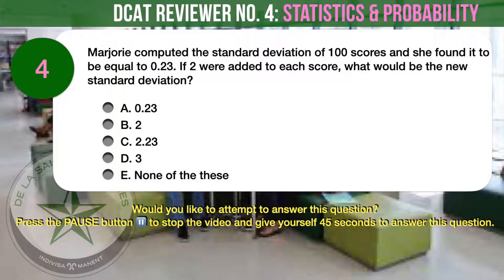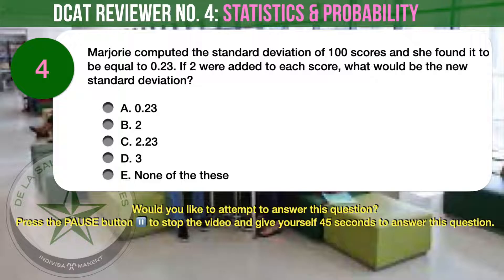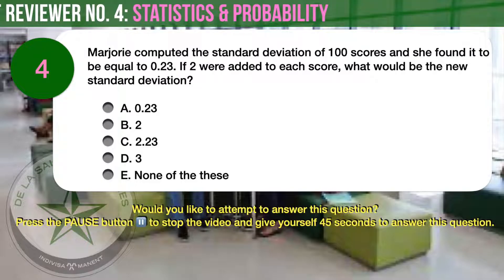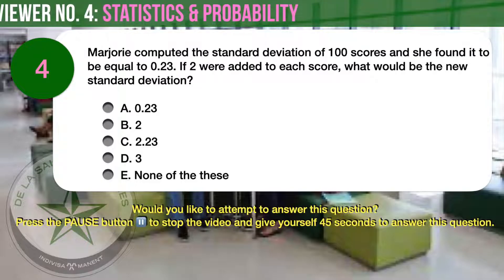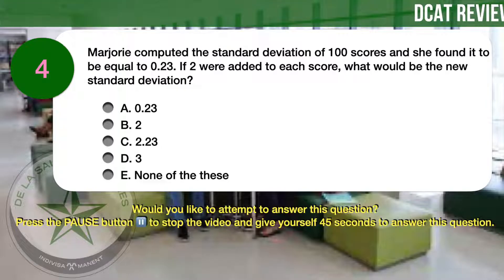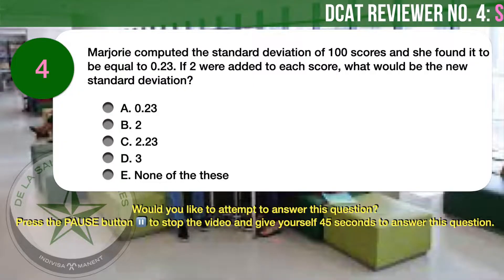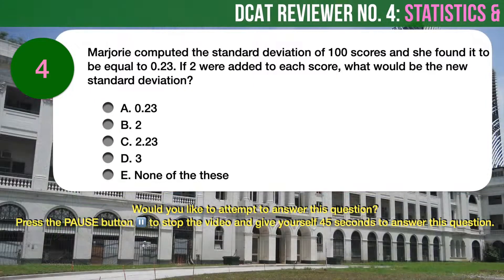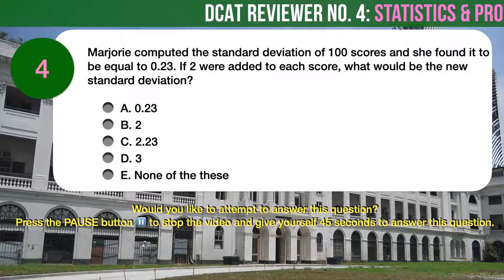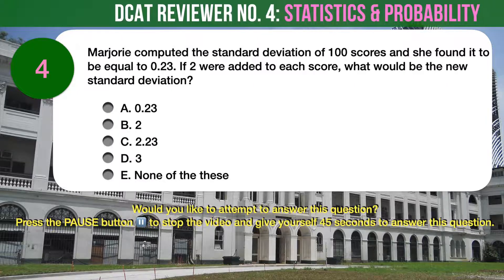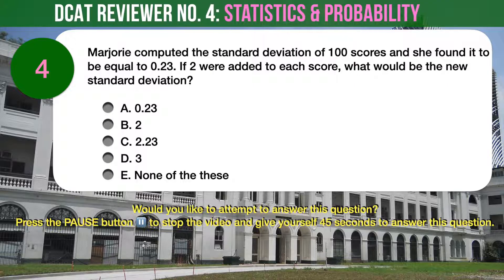Question number 4. Marjorie computed the standard deviation of 100 scores and she found it to be equal to 0.23. If 2 were added to each score, what would be the new standard deviation? A, 0.23. B, 2. C, 2.23. D, 3. E, none of these.